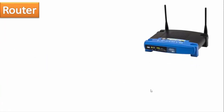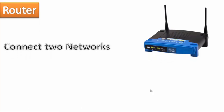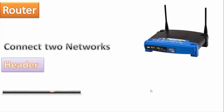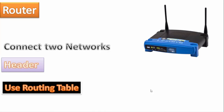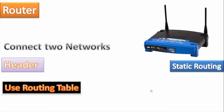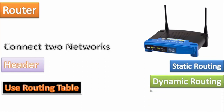Routers are more advanced devices which connect two or more networks. They gather information from a packet header, like its destination, and then use a routing table to forward it. Routing is of two types: static routing, where the path is manually set and used in very small networks of two or three; and dynamic routing, used in big networks, where routing protocols find the best and shortest path for a packet.